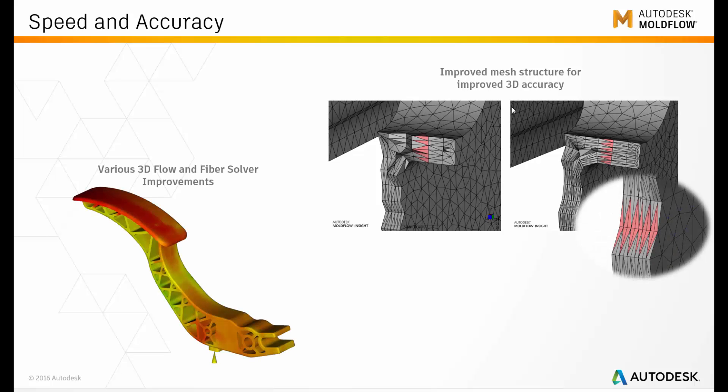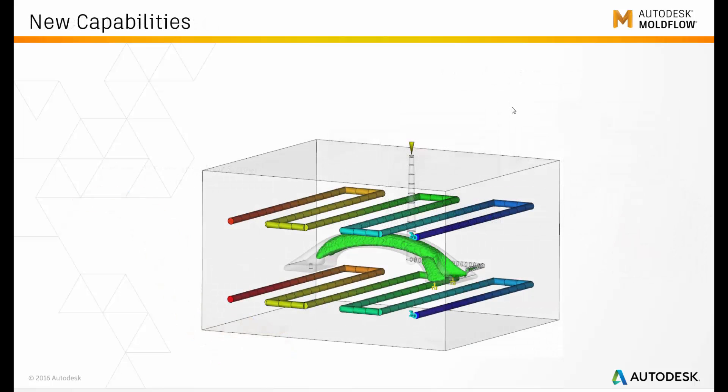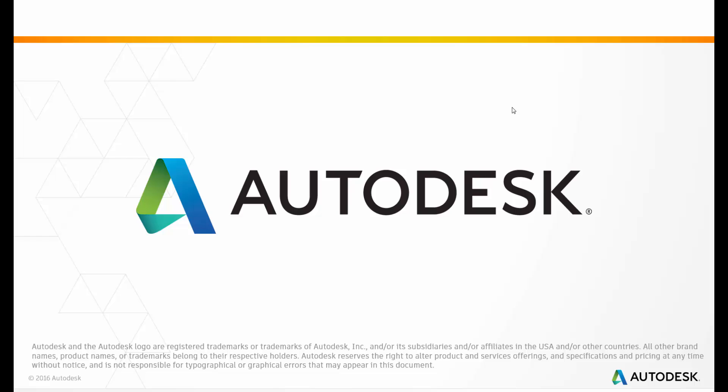We made some changes in the way we create tet meshes. We now produce ten layers by default through the thickness instead of six, and the structure of the meshes has changed a little to improve numerical stability. We made a number of changes to the solvers to improve accuracy, and we added cooling to the gas-assisted injection molding. Thank you very much for your attention — have fun with Molflow 2017.